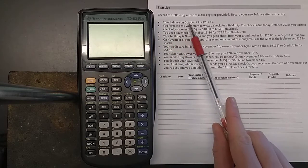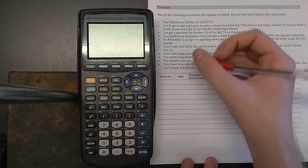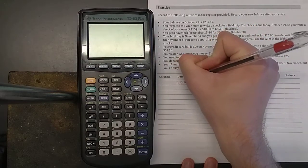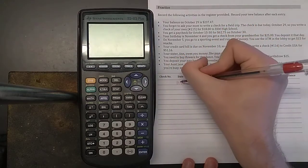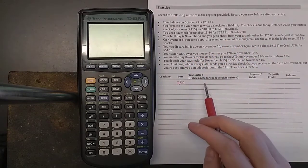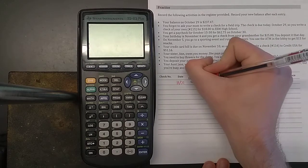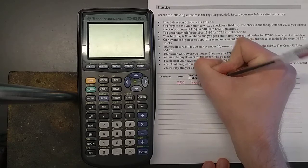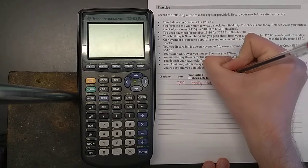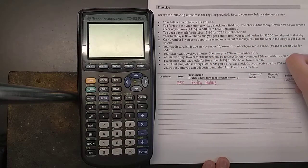Bullet number one says your balance on October 29th is $237.47. So for October 29th, I'm going to write 10/29. You can write the year if you want, but probably not super necessary. Transaction. Well, we're not giving any money away. We're not getting any extra money. Let's just say this is our starting balance. Let's say that this is like a new page in our check register. So this is how much money we start with. Our starting balance is $237.47.